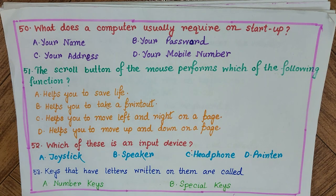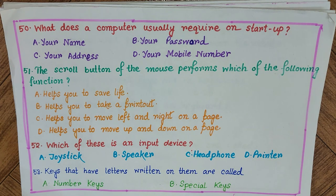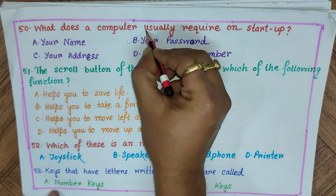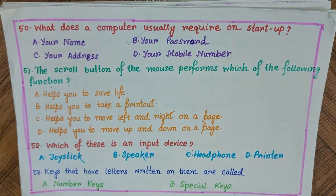Let us begin with question 50: What does the computer usually require on startup? Options are A) your name, B) your password, C) your address, D) your mobile. The answer is B) your password. Question 51: The scroll button of the mouse performs which of the following functions?